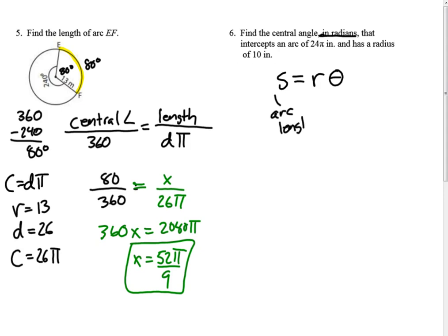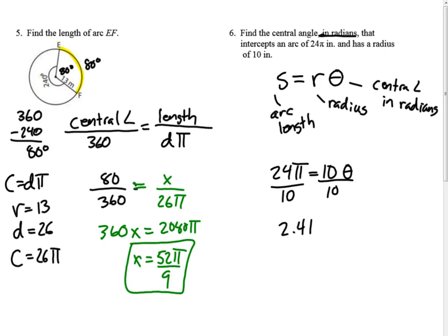So what does all those mean? S is the arc length, r is the radius, and theta is the central angle in radians. Find the central angle in radians that intercepts an arc of 24 pi. So that would be 24 pi has a radius of 10, and we're going to find theta. So we would simply divide by 10. 2.4 pi is the central angle. And it's as simple as that when you know the formula.